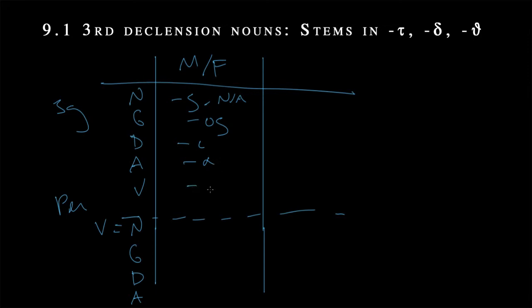I'm going to leave out the vocative here at the bottom because we know that the nominative is always equal to the vocative in the plural. So then for our masculine or feminine types, we're going to be getting this pattern of ending, either a sigma at the end or nothing at all, non-applicable, omicron sigma in the genitive singular, a short iota in the dative singular.